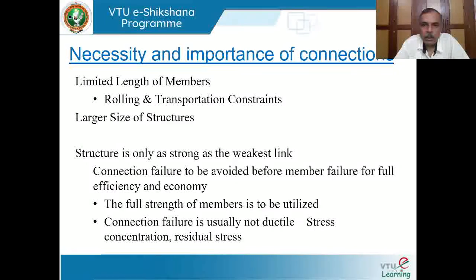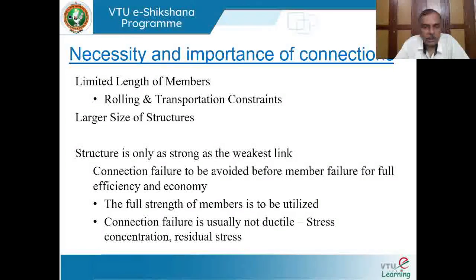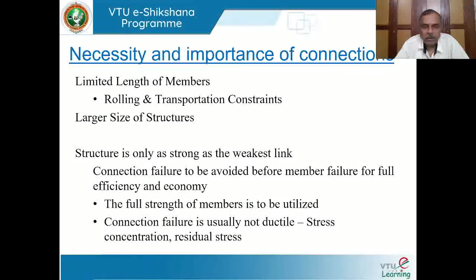Connections are needed primarily due to limitations on available member length, arising from rolling and transportation constraints. It is not possible to have members of any arbitrary length — they must be restricted to 8, 10, 12, or sometimes 15 meters depending on transportation facilities. In large structures with spans of 8–12 meters and column heights of 10–12 meters, it becomes extremely difficult to use a single section, making splicing and connections necessary.